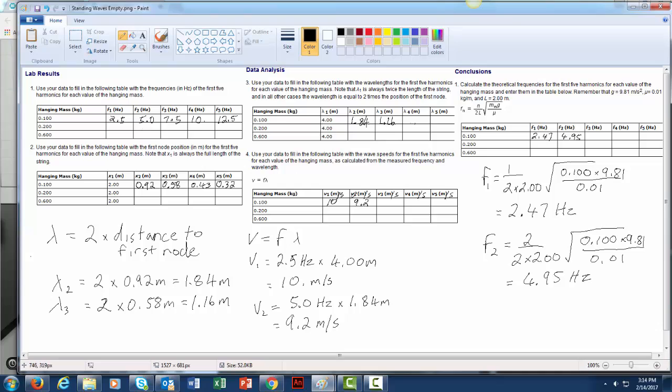So in order to get those frequencies, what you do is you take 2.5, multiply it by 4, 5.0, multiply it by 1.84, and then so on and so forth throughout each of those calculations. So you can see that I've done a couple of sample calculations there on how you get V1 and then V2, and you can continue on and get the rest of them for all the other values.